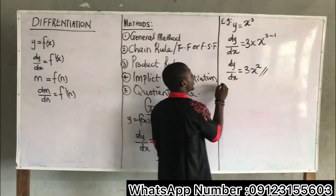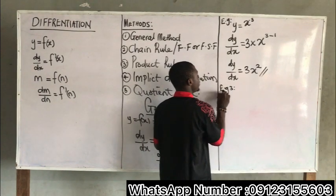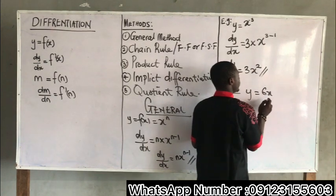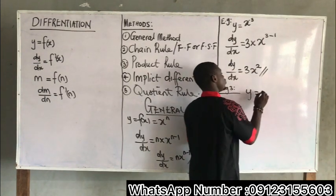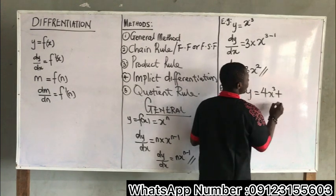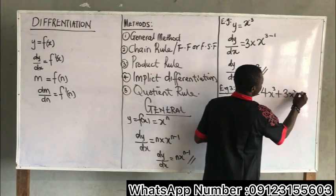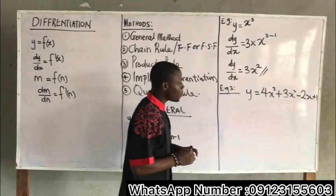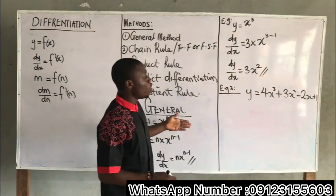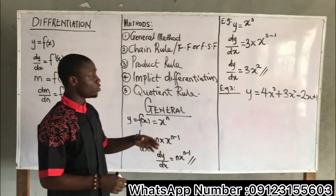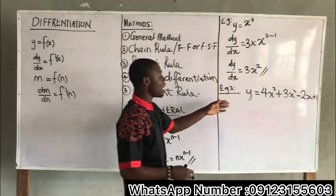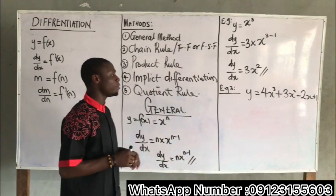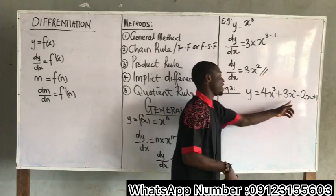Also, example 3: if I have Y equals 4X cubed plus 3X squared minus 2X plus 1 — we call this a polynomial equation. How do I differentiate this via the general method? We differentiate Y with respect to X, so we write dy over dx equals...